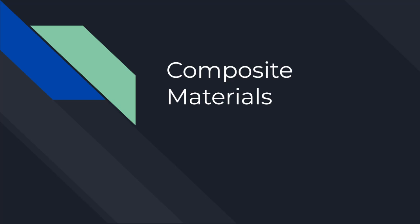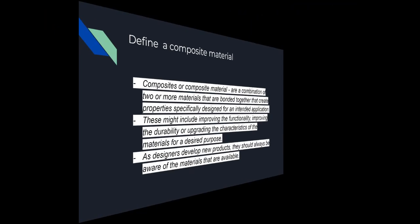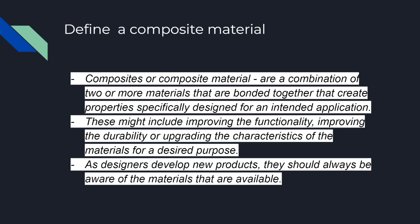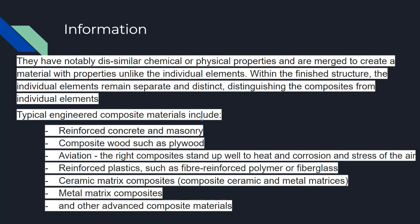So what are composite materials? Composite materials are a combination of two materials that are bonded together to create properties specifically designed for an intended application. They might improve the functionality, durability, or upgrade the characteristics of the material for a desired purpose. As designers, when we develop new products, we should be aware of composite materials as they give the best properties of two materials. They have noticeably dissimilar chemical or physical properties because they are merged to create a new material with unlike properties.